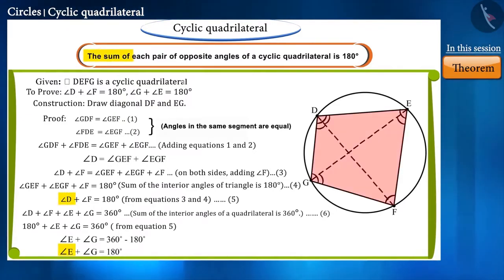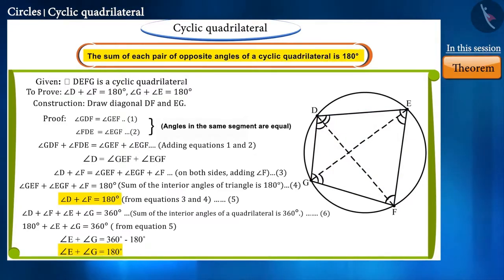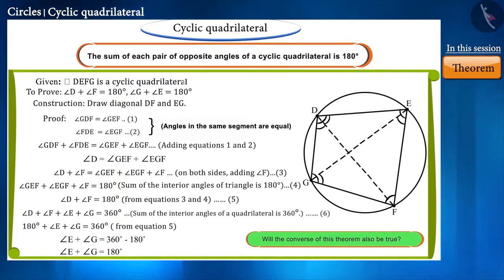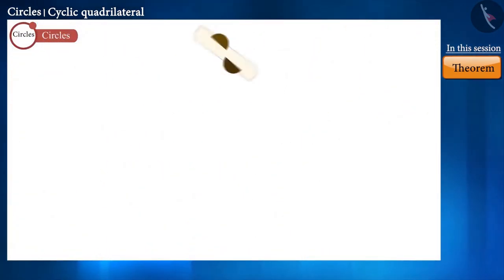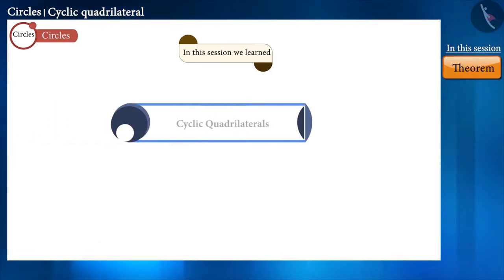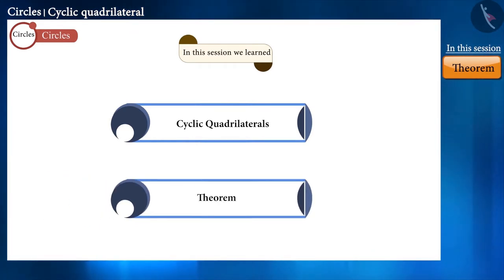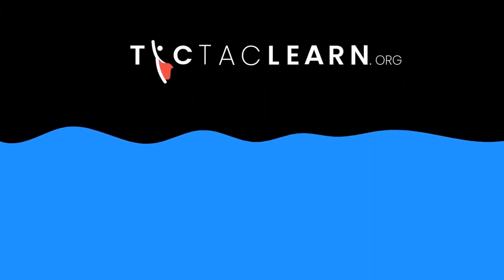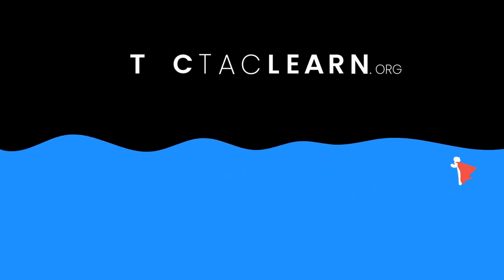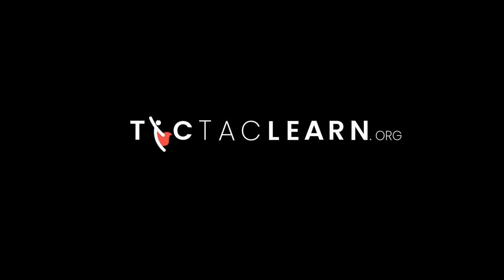Thus we have proved the theorem that the sum of each pair of opposite angles in a cyclic quadrilateral is 180 degrees. Will the converse of this theorem also be true? We will discuss this in detail in the next video. That is all for this session — today we discussed the cyclic quadrilateral and a theorem related to it. See you in the next video, thank you.